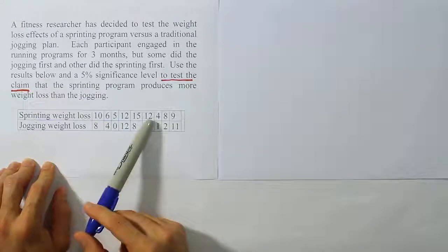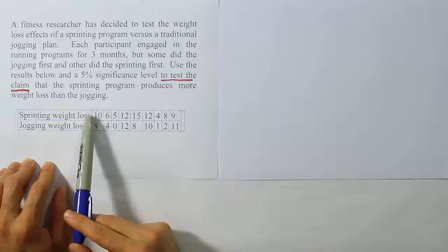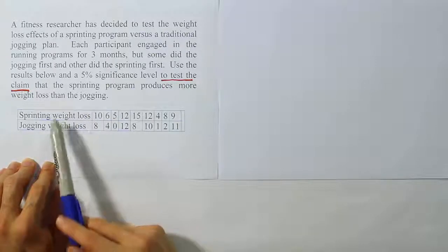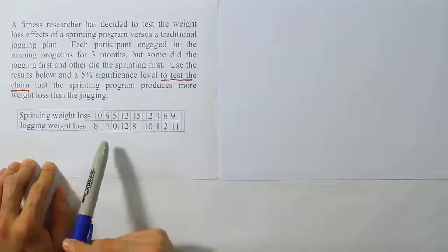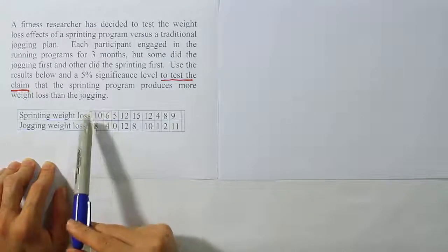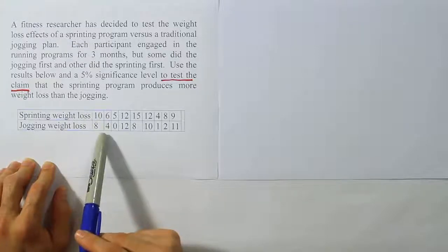The point is either way for each subject we have a before and after score, so to speak. It's not before and after but it's rather sprinting and jogging and we have the weight loss for each. So the data is dependent because every one of these values is paired up with the subject's other values.